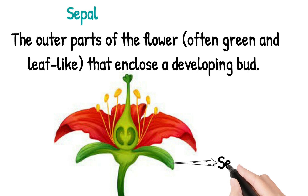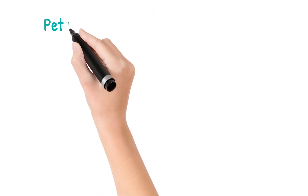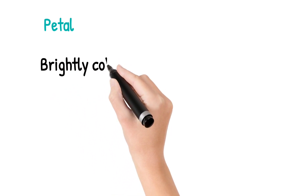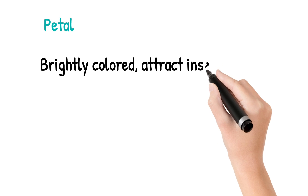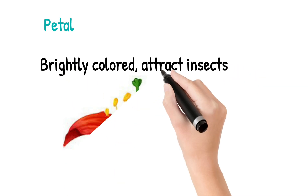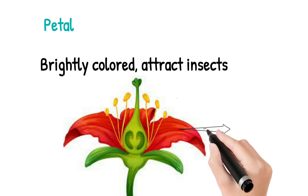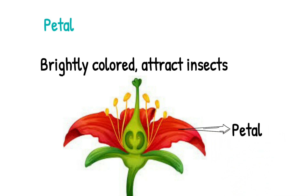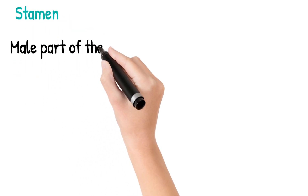Next we move on to the petal. Petals are usually brightly colored — for example, they might be red, yellow, or other colors — which helps to attract insects. You can see the picture: the petal is in bright colors.